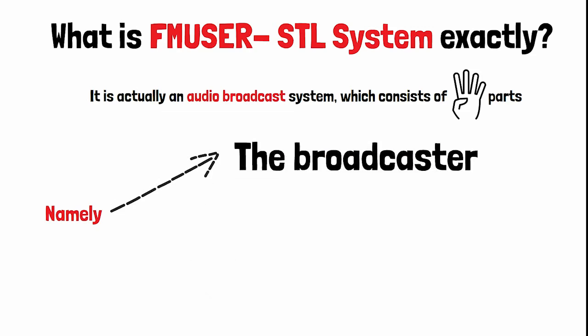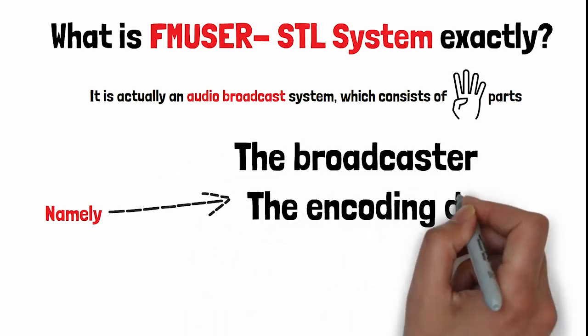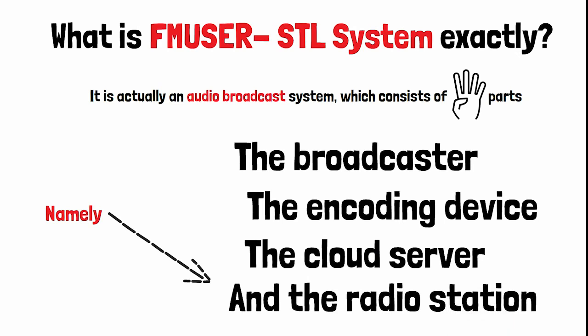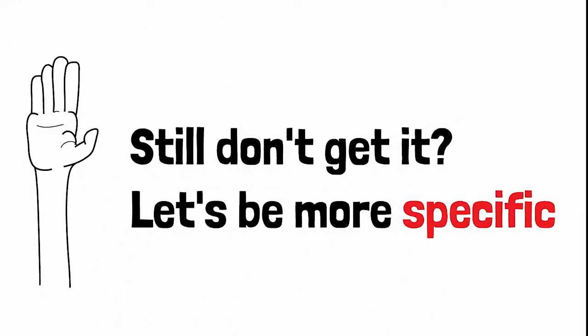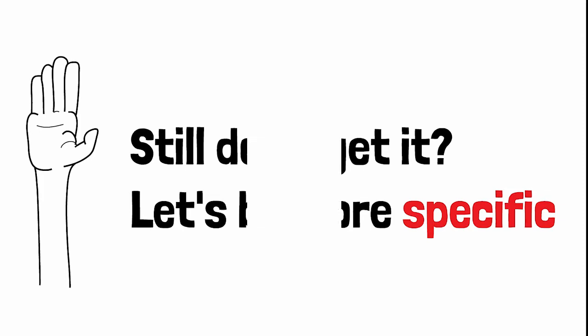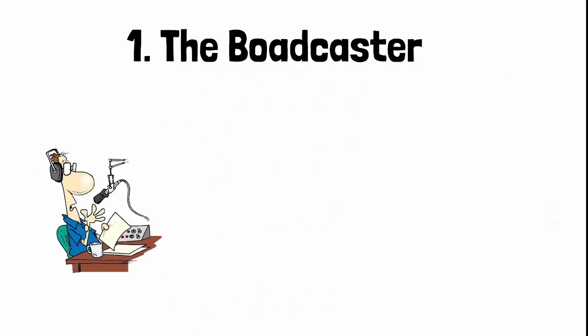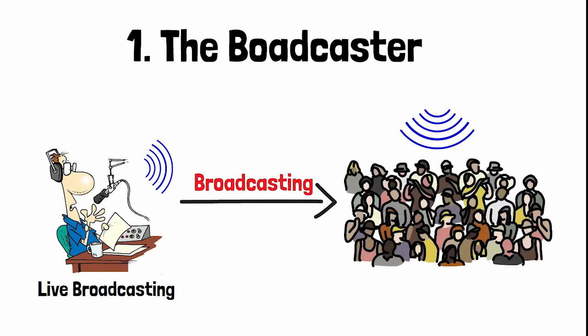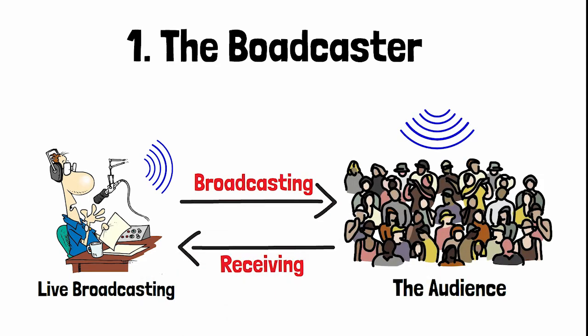The FM User STL system consists of: the broadcaster, the encoding device, the cloud server, and the radio station. Firstly, the audio will be delivered by the broadcasters from the radio studio and be broadcast to the audience after being transmitted into audio signals.